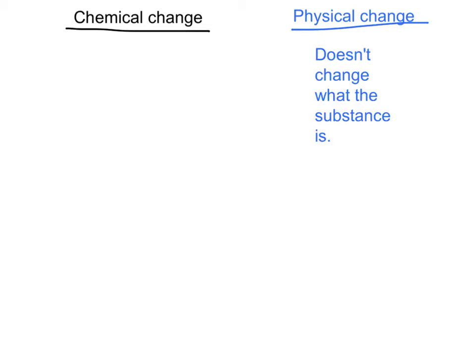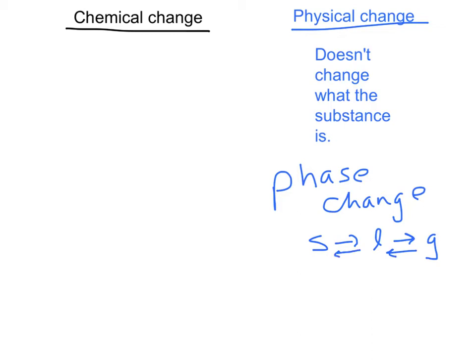We also have chemical and physical change. Physical change doesn't change what a substance is — if I saw the wood, it's still wood; if I break the glass, it's still glass. Phase changes — going from solid to liquid to gas, or backwards — are physical changes because I'm not changing what I have, just the phase it's in. Chemical changes change what is there. If I burn a piece of wood, I have ash, which is different from wood. Or if I bake dough, it becomes bread. Chemical changes change what I have and are usually the result of a reaction.